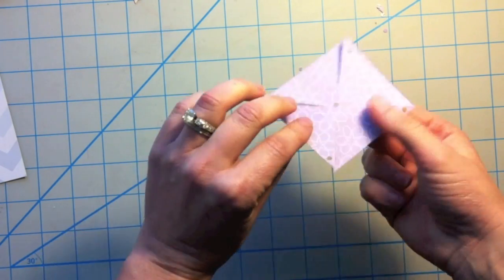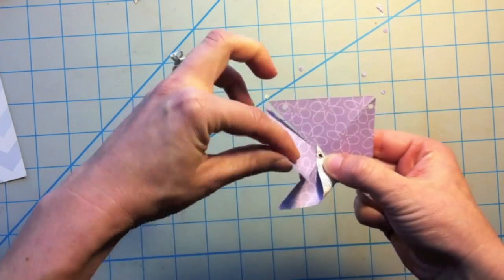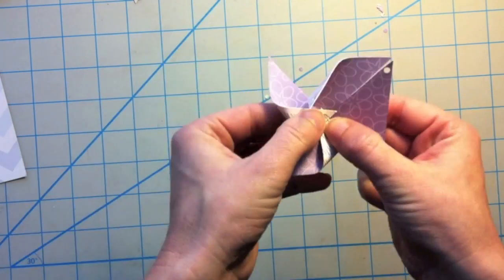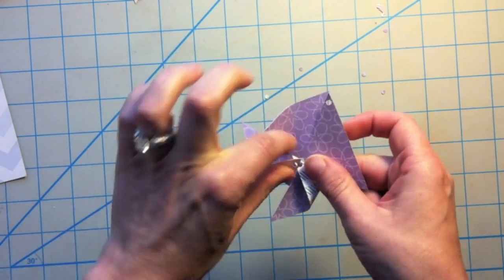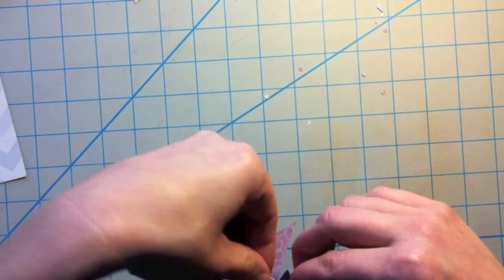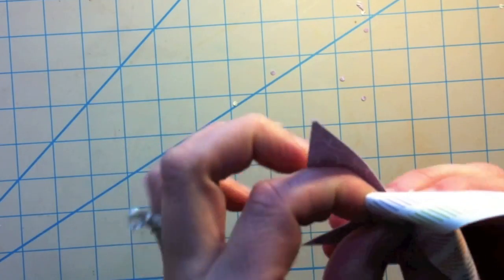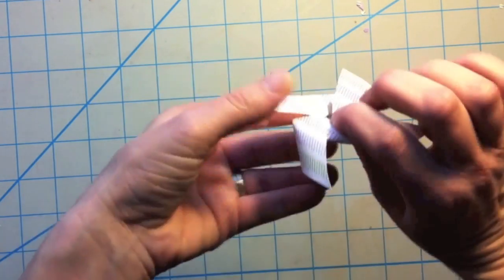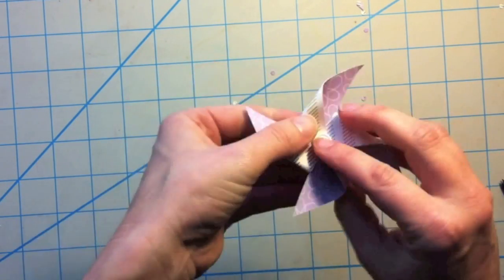So once you've got your holes punched, I'm just grabbing a brad from my stash. You just fold over those corners until you can get those holes to line up with each other. And then you just clasp the brad on the back and then there you've got your pinwheel.